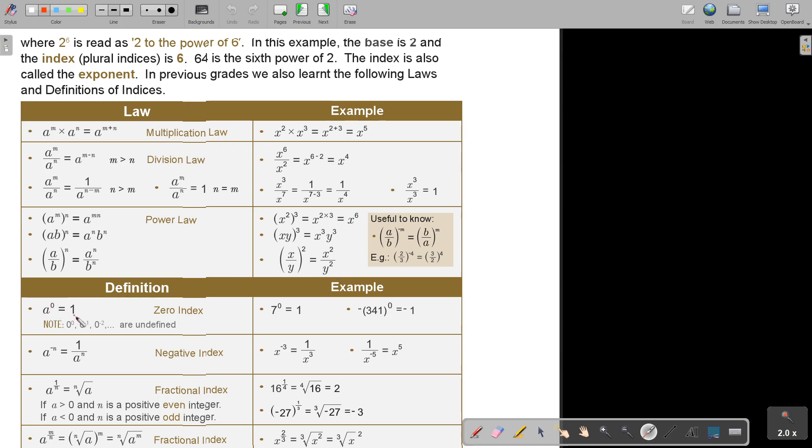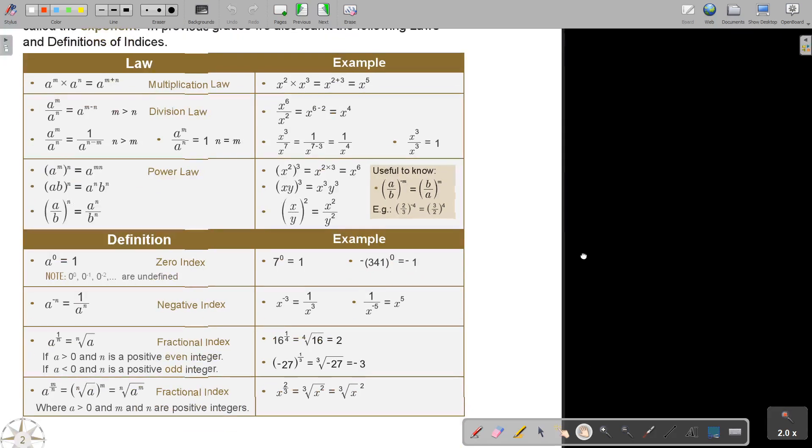Anything to the power of 0 is equal to 1. Don't forget that. And there I gave you an example. But be careful. This will be equal to 1. But if you multiply with that negative, you will get negative 1.